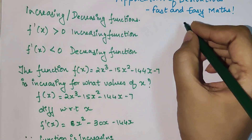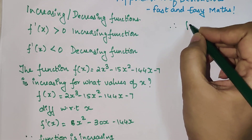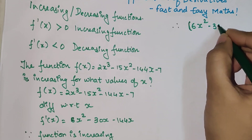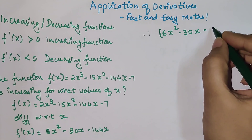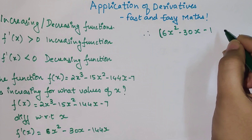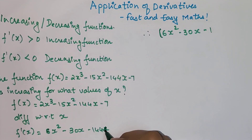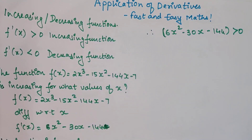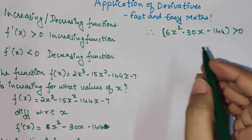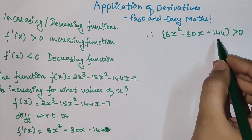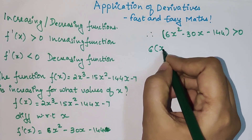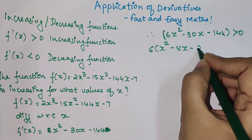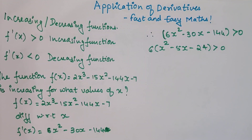Therefore, f'(x) = 6x² - 30x - 144 > 0. Here we can take 6 as a common factor. When we do that, we have x² - 5x - 24 > 0, dividing both sides by 6.